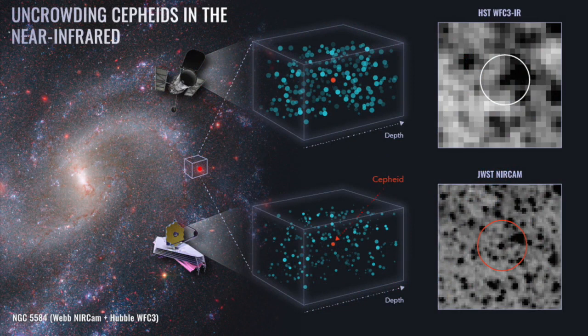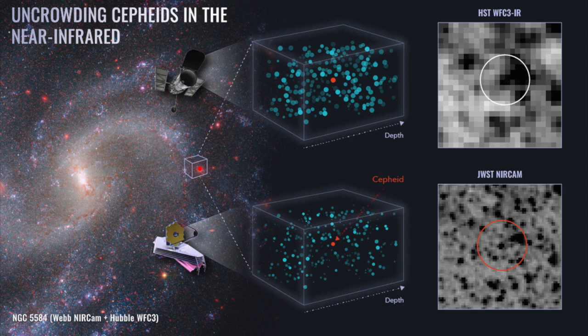Sharp infrared vision is one of the Webb Space Telescope's strengths. With its large mirror and sensitive optics, it can separate the Cepheid light from neighbouring stars.